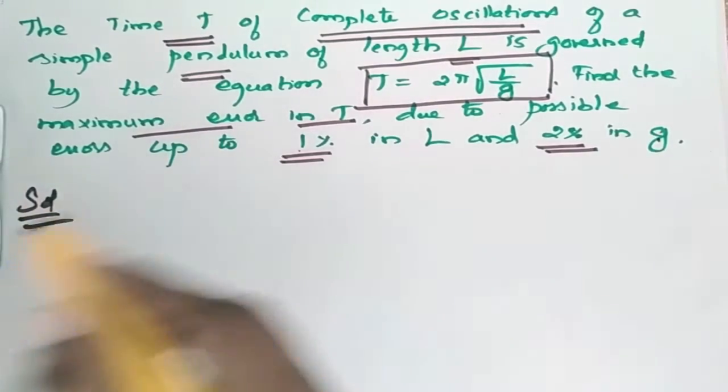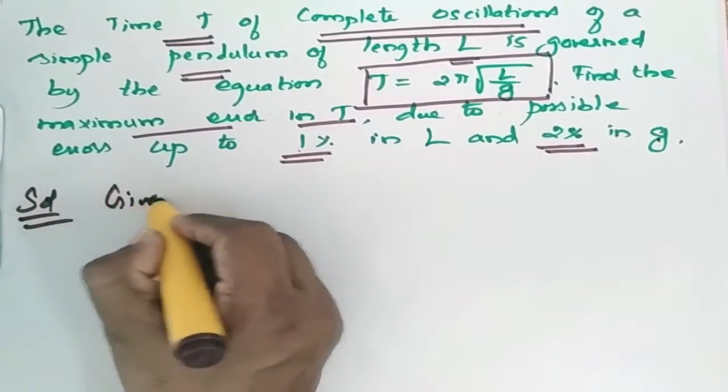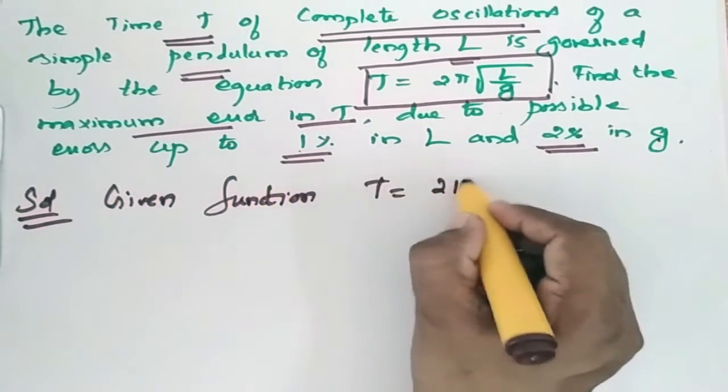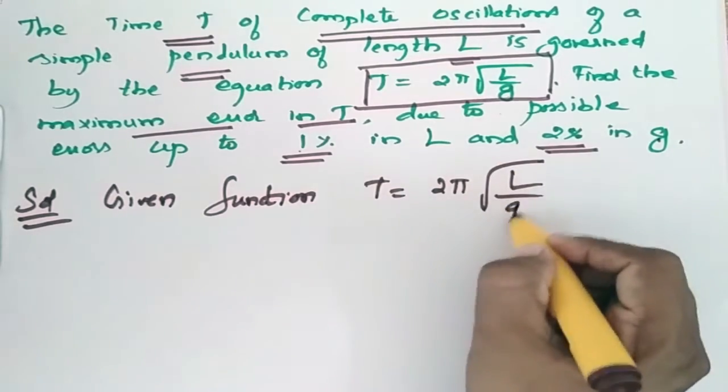Solution. First, the given function is T = 2π√(L/g).